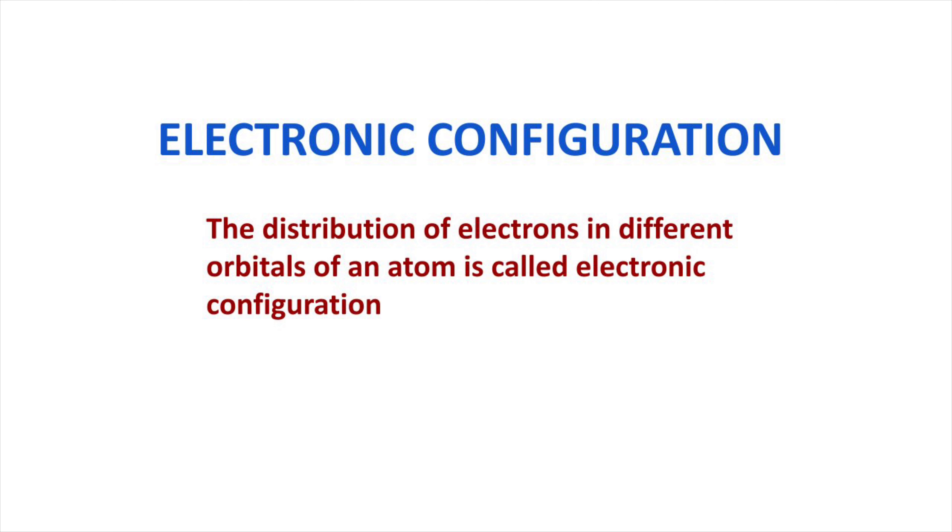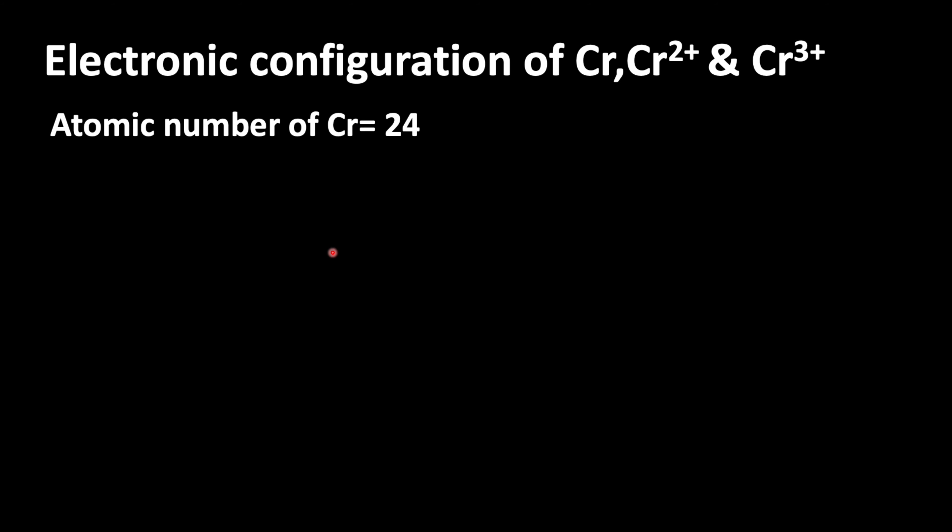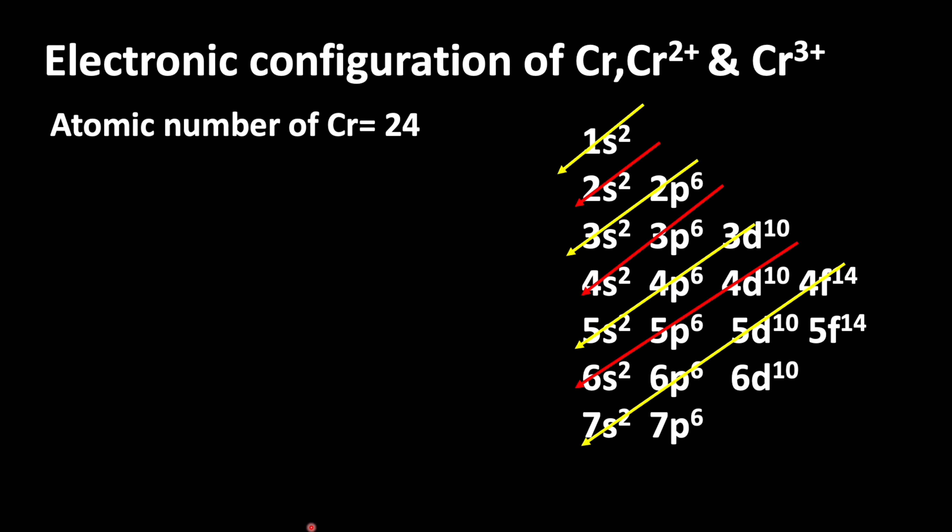To write electronic configuration, we need to know the atomic number. Chromium's atomic number is 24. You can see the increasing order of filling orbitals: after filling 1s, electrons enter 2s, then 2p, 3s, 3p, 4s, and then 3d orbitals. Using this, let us write the electronic configuration for chromium.